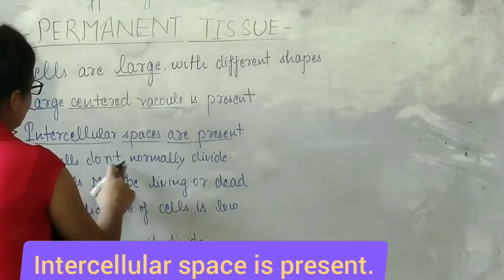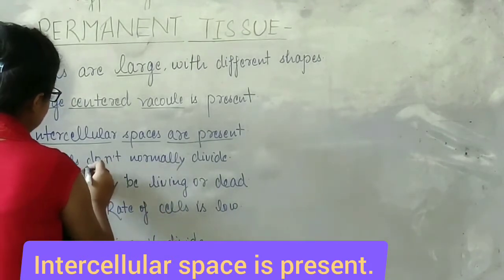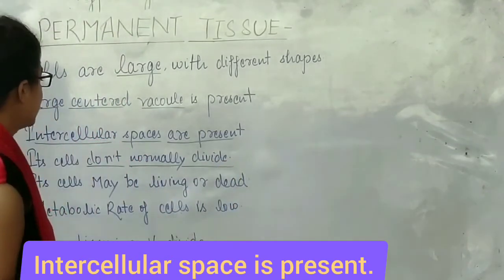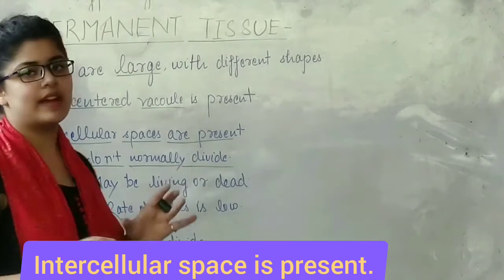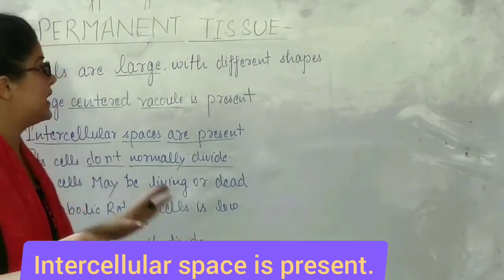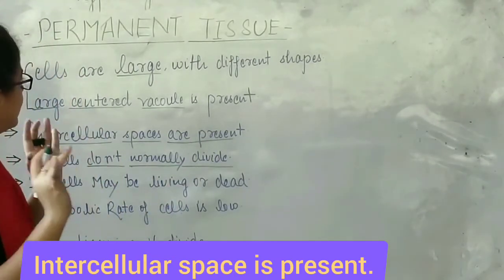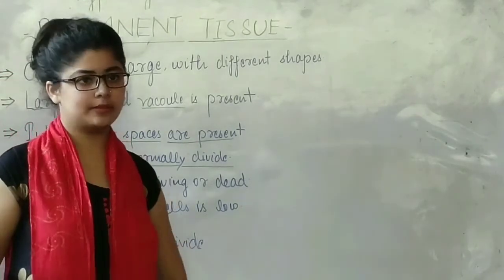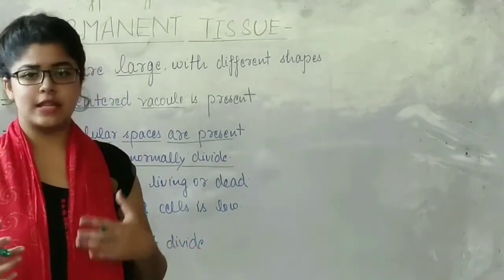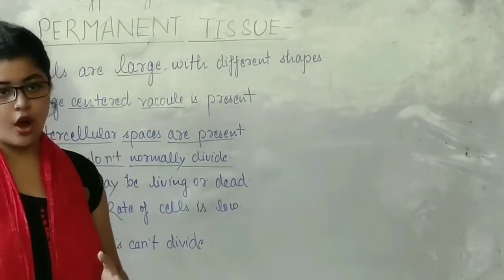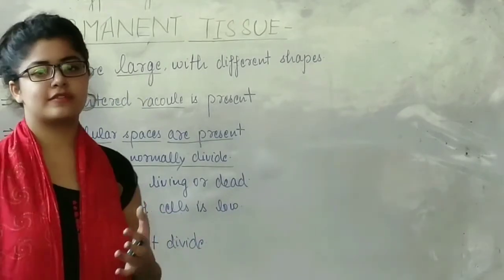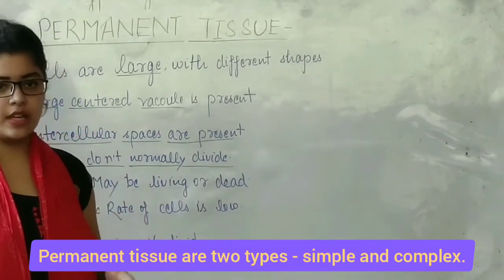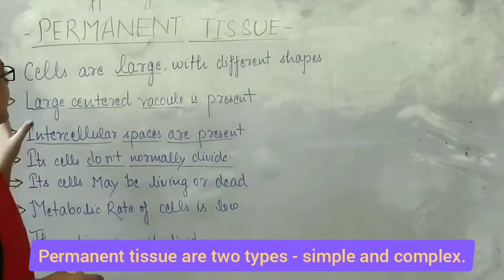The cells of permanent tissue do not normally divide — they are permanently present in the plant. They provide support and protection and help in different processes like photosynthesis and food storage. These are the functions of permanent tissues.